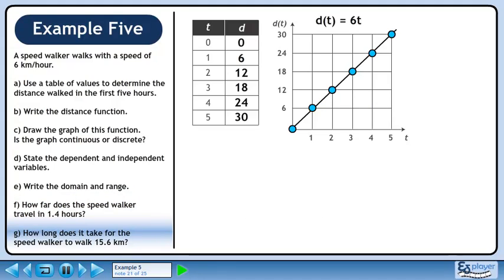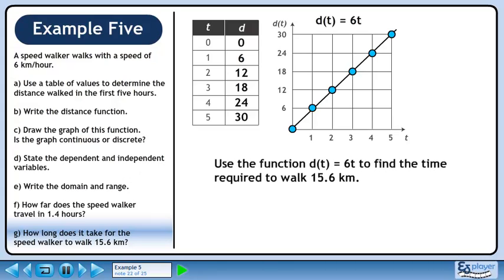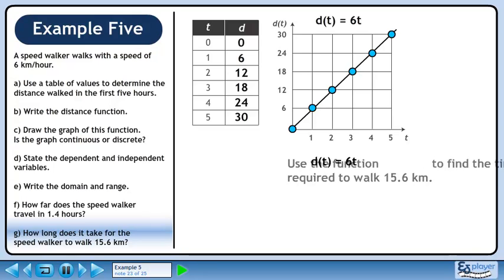In Part G, how long does it take for the speed walker to walk 15.6 km? Use the function d equals 6t to find the time required to walk 15.6 km. Plug in 15.6 for d.